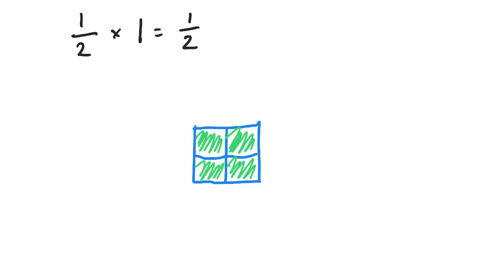And if I have a fraction like this, where I have 4 fourths or 4 quarters, that is equal to 1. Everything filled in means 1 whole. So 4 fourths is equal to 1, same as 3 thirds or 6 sixths is equal to 1.